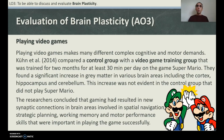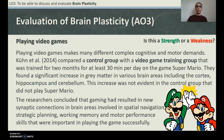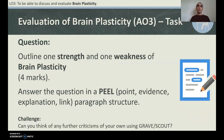The gaming study also showed benefits in strategic planning, working memory, and motor performance skills that were important in playing games successfully. This is a strength — it shows that doing brain activities like playing a game can actually change the brain and increase brain volume. Task: Outline one strength and one weakness of brain plasticity and answer in a PEEL paragraph structure.